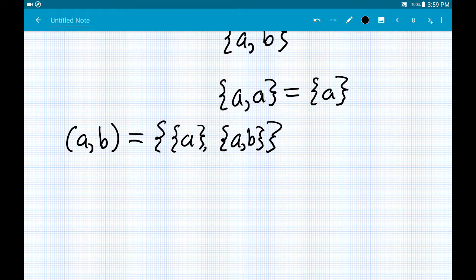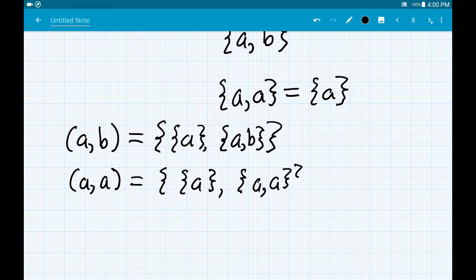So one question that you might naturally ask is what happens if I want to look at the ordered pair (A, A). Well, this would be equal to the set of the set of A together with the set of the pair {A, A}.